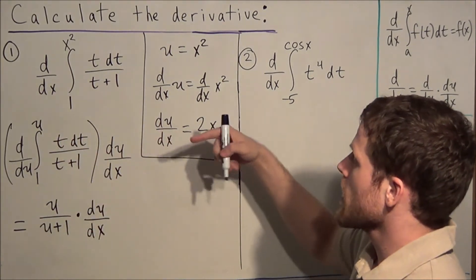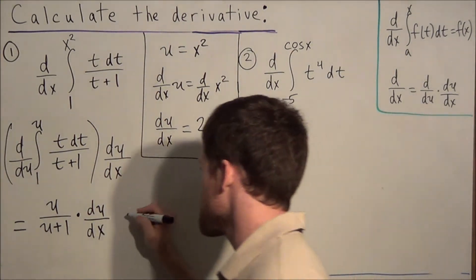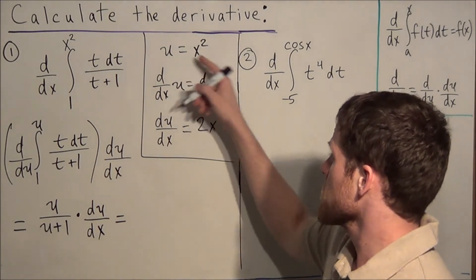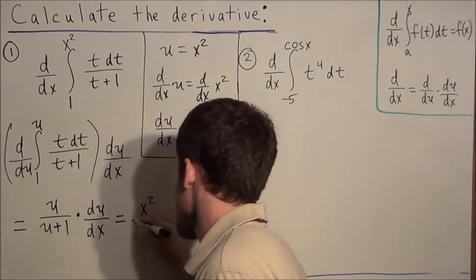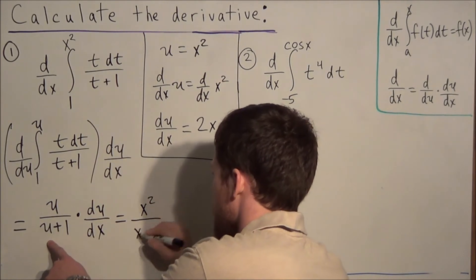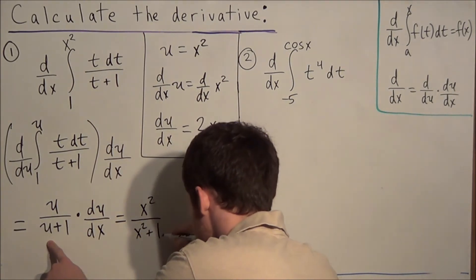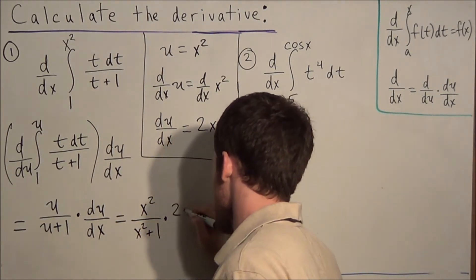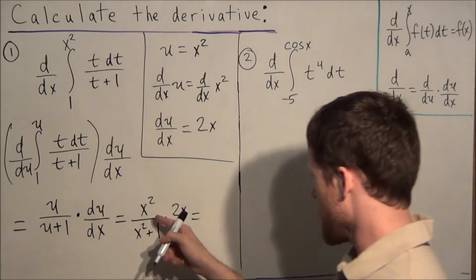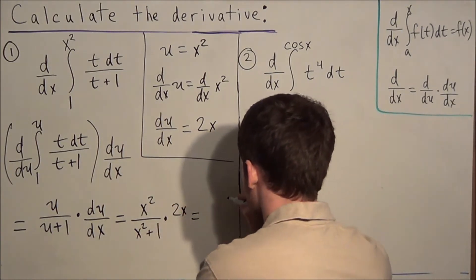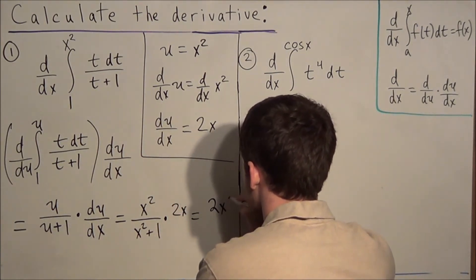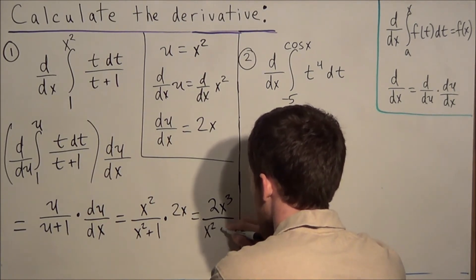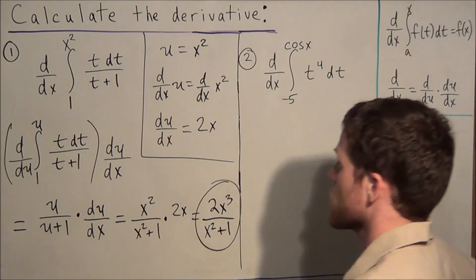We want to put the answer back in terms of x. So instead of u/(u+1), we replace u with x squared, giving us x²/(x²+1), times du/dx. Since du/dx equals 2x, multiplying and simplifying gives us 2x·x² over x²+1, which equals 2x³/(x²+1). This is our final answer to the first example.